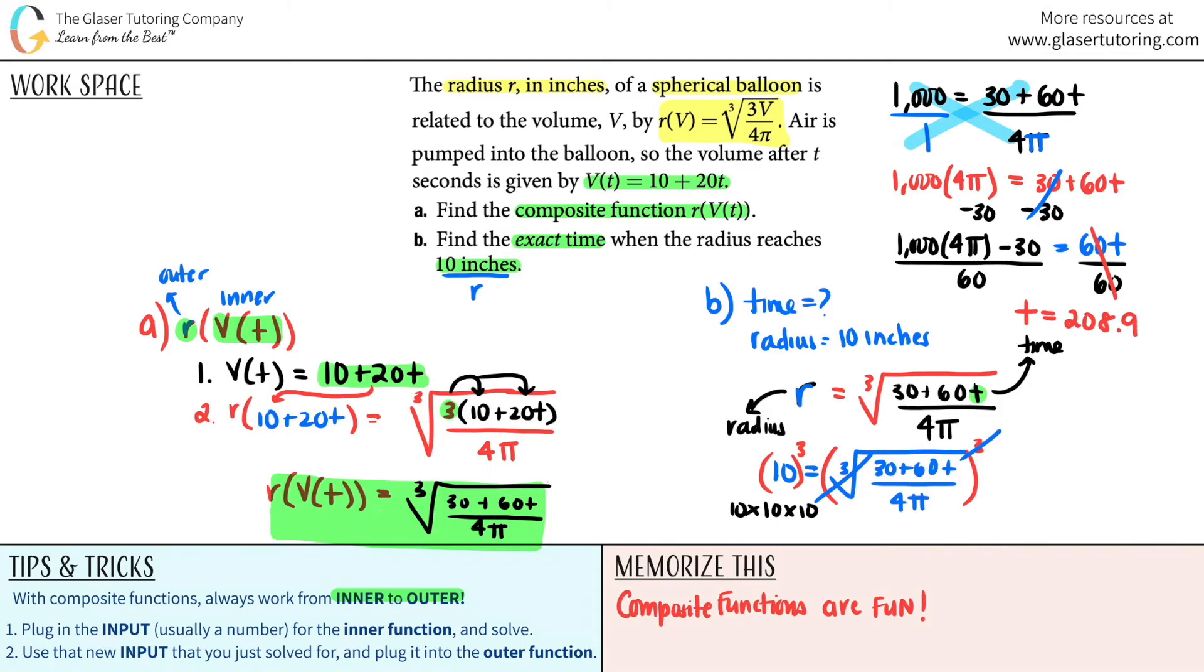And you get an exact amount of basically 208.9. And that is in, let's see, what time did they give us? They said seconds, t seconds. So this is how many seconds it takes to get that radius.